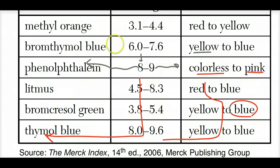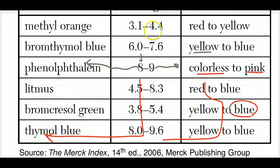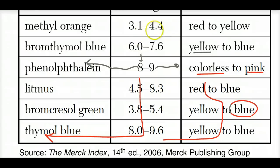You can use multiple indicators to narrow down pH. If methyl orange is yellow, the pH is 4.4 or higher. If bromothymol blue is also yellow, the pH is 6.0 or lower. So the pH must be between 4.4 and 6.0 — and any value in that range (like 5 or 4.6) would be an acceptable answer. That's essentially the acid and base unit.